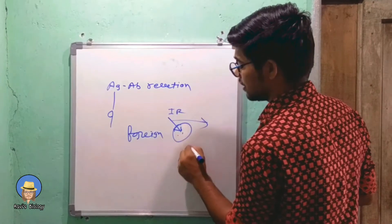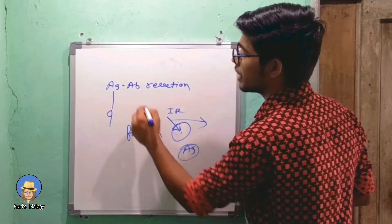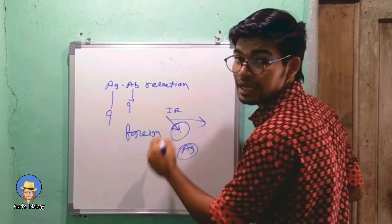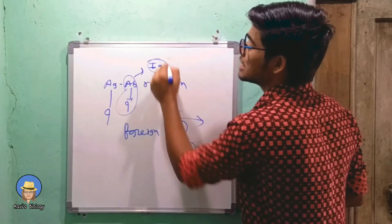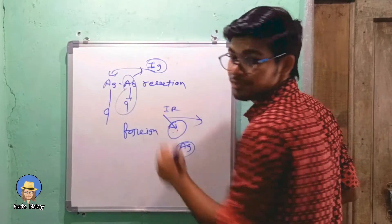Now what is antibody? It is an immunoglobulin specially produced against antigen.